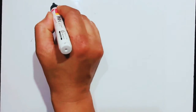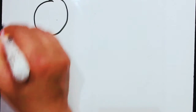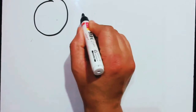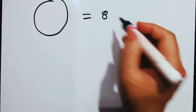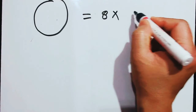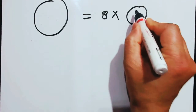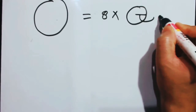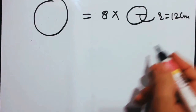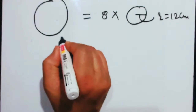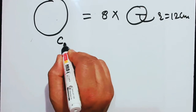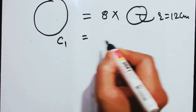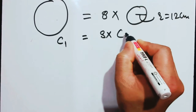They say that the circumference of a circle — they are talking about a circle and its circumference. The circumference of this circle is equal to eight times the circumference of a particular other circle. They have also given the radius as r equals 12 centimeters. So there shouldn't be any problem: if the circumference is C1, that should be equal to eight times C2.